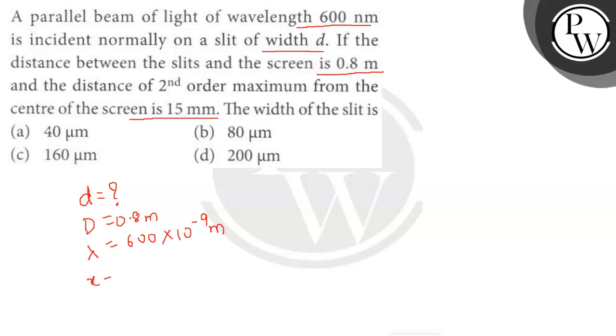The second order maxima distance is x, so x is given as 15 millimeter. Convert it into meter, so it will be equal to 15 times 10 to the power minus 3 meter. We have to calculate the slit width.